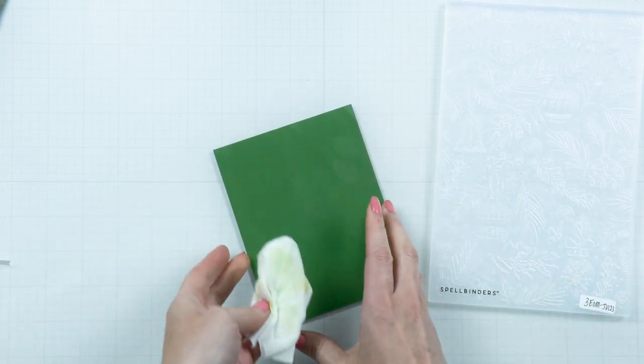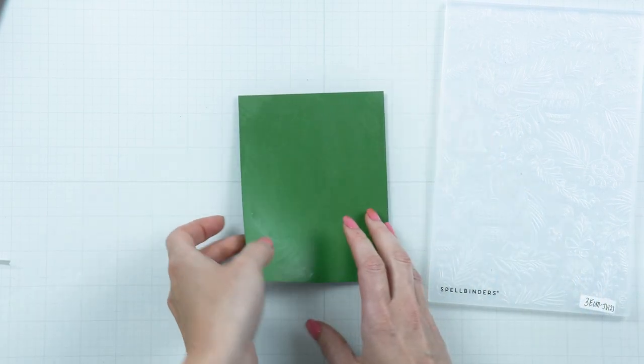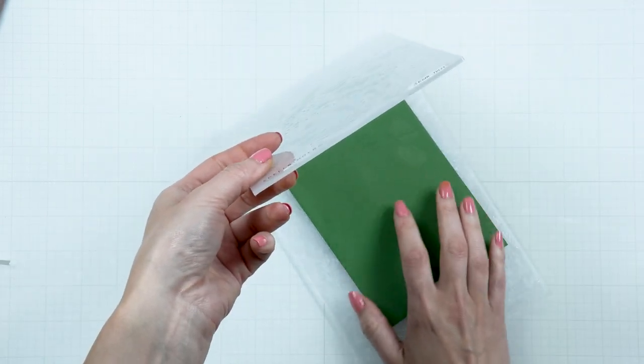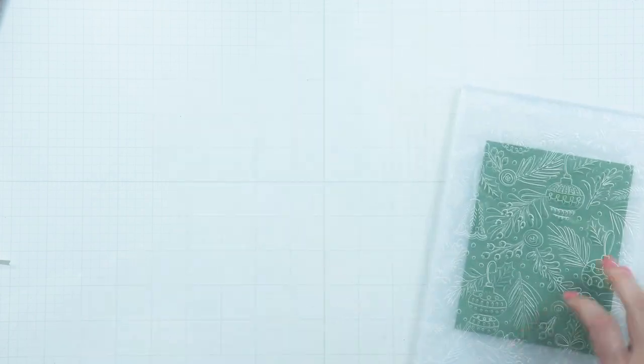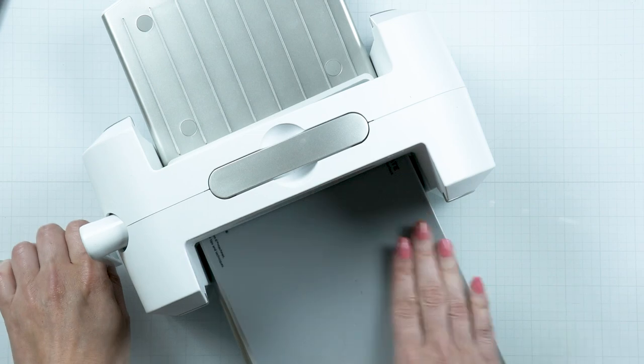Cut a sheet of our Fern cardstock to 4.25 x 5.5 inches. Use a wet baby wipe to wet the paper on both sides. You can also use a water mister. This will help the paper fiber stretch and not crack from all of the pressure.